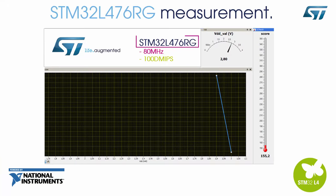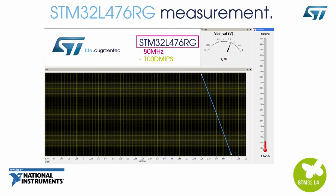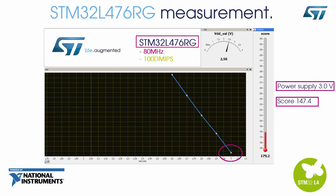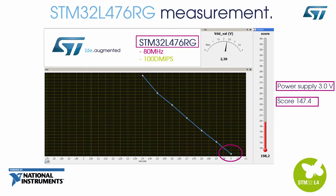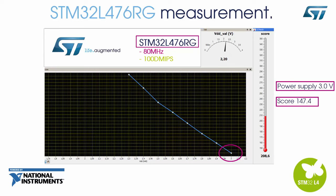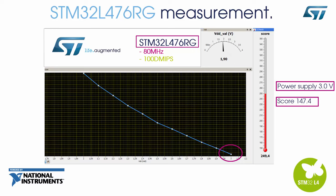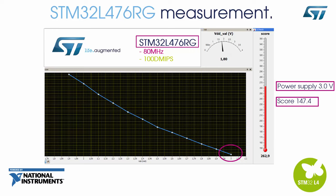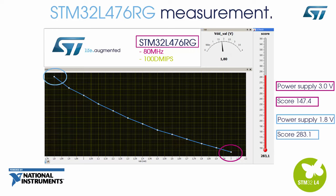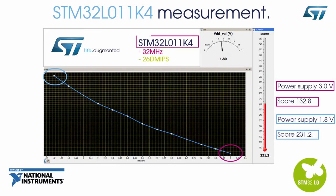Now let's play with the device and ST power measurement bench. For a 3-volt supply, the score is 147.4. Pushing the experience further, at 1.8 volts the score is 283.1. Results for the STM32L011 are also good: 132.8 at 3 volts and 231.2 at 1.8 volts.